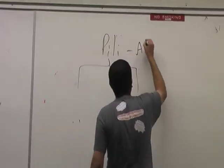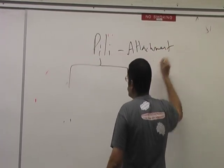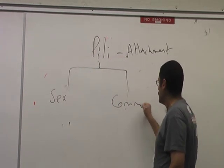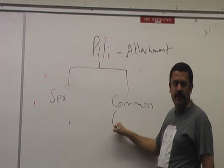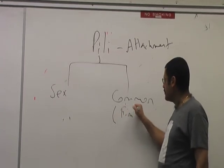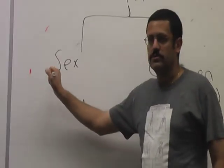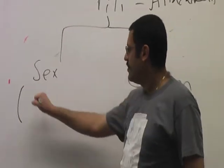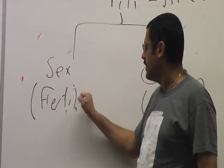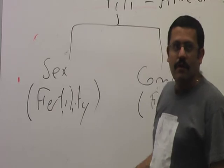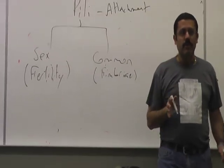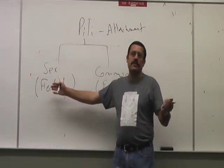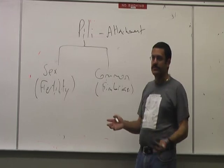So pili, attachment, that's the function, that's a big word to remember. Two types, you have the sex, and you have the common. The common are also called fimbriae. The sex are also called, such as an F-pilus, fertility, right, fertility pili, F pili. Don't worry about numbers, but relative numbers. So in other words, I don't expect to know that this sex is usually 1 to 3 or 1 to 4, or this one could be in the thousands, although it's very easy to remember.